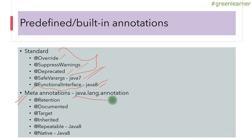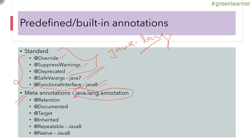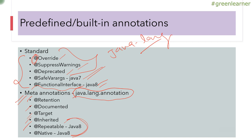The next category is meta annotations. They are under the java.lang.annotation package, while standard annotations are under java.lang. The meta annotations are: @Retention, @Documented, @Target, @Inherited, @Repeatable, and @Native — the last two were introduced in Java 8. An important point: annotation names start with the at-rate symbol (@), so whenever you see a name starting with @, you know it is an annotation.